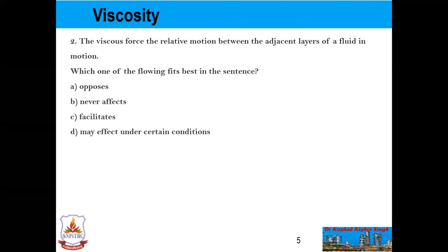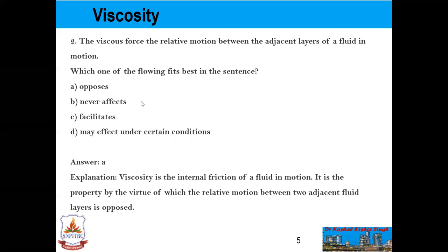Now the second example: the viscous force and the relative motion between the adjacent layers of a fluid in motion — which one of the following fits best? Options are: opposes, never affects, facilitates, may affect under certain conditions. The answer is A, opposes. Viscosity is the internal friction of a fluid in motion; it is the property by virtue of which the relative motion between two adjacent fluid layers is opposed.